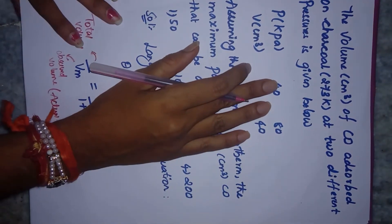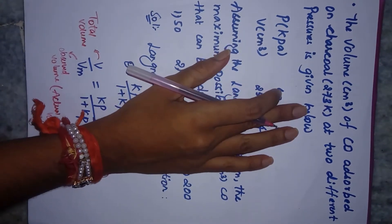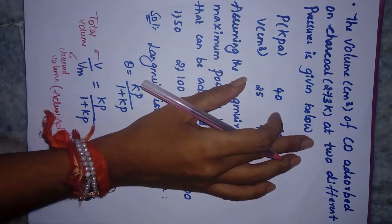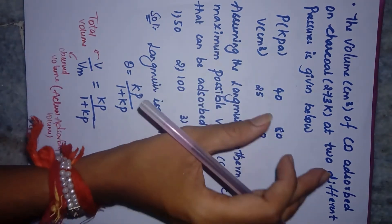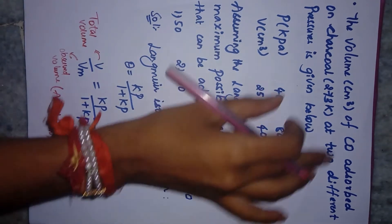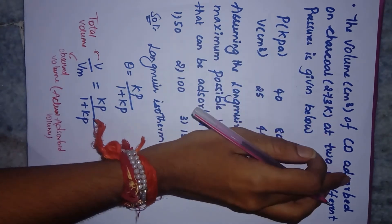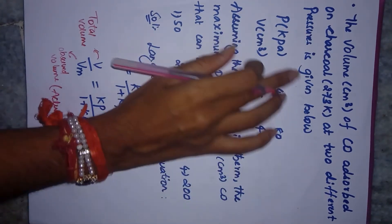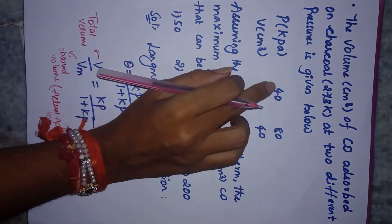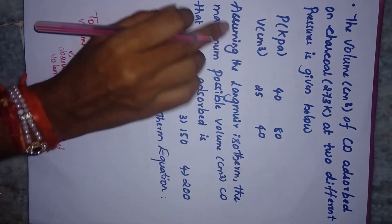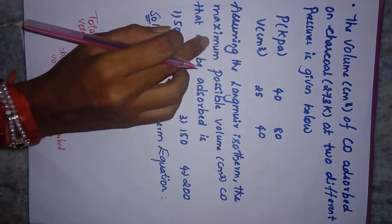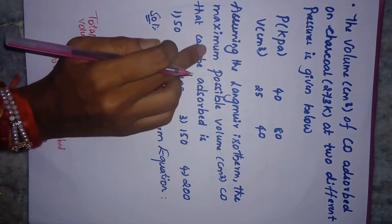This particular question came in CSI June 2018 and is from surface chemistry, specifically Langmuir adsorption isotherm. The question states that the volume of CO adsorbed in charcoal at two different pressures is given, and assuming the Langmuir isotherm, find the maximum possible volume of CO that can be adsorbed.